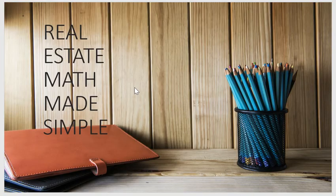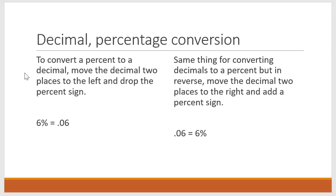Real estate math made simple — my favorite type of math when it is simple. First off, we have our decimal and percentage conversion. When I'm typing fast on a calculator I'll easily misplace a decimal or a zero and the whole problem's wrong. To convert a percent to a decimal, you move the decimal two places to the left and drop the percent sign — six percent equals point zero six. For converting a decimal to a percent, you move the decimal two places to the right and add a percent sign — point zero six equals six percent.